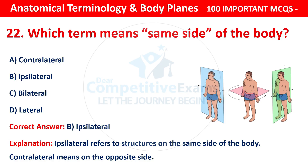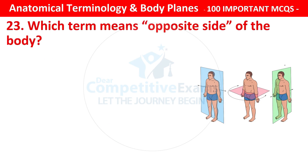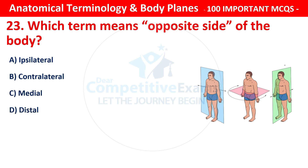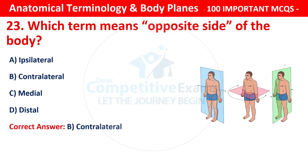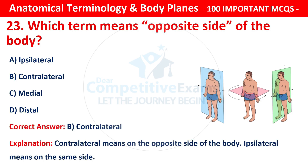Question number 23: Which term means opposite side of the body? Options are: ipsilateral, contralateral, medial, or distal. The correct answer is B — that is contralateral. Contralateral means on the opposite side of the body. Ipsilateral means on the same side.